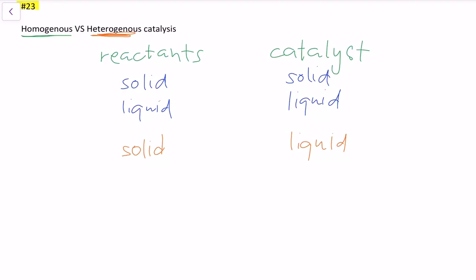So one example that the book mentions is catalytic converters where your reactants are in gaseous phase and the catalytic converter itself is in a liquid - or sorry, not liquid - in solid. Your catalytic converter is solid.